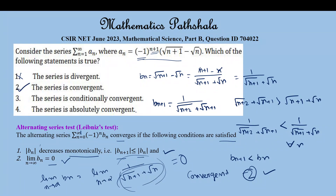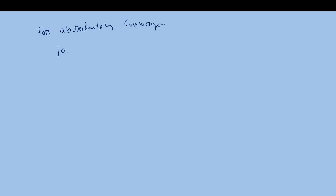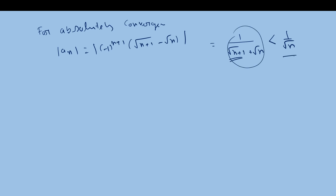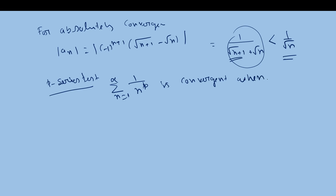Now we have to check whether the series is conditionally or absolutely convergent. For absolute convergence, we check |a_n|, which equals |(-1)^(n+1) * (√(n+1) − √n)| = 1 / (√(n+1) + √n). This term is less than 1/√n if we neglect the extra root term. From the p-series test, the summation of 1/n^p is convergent when p > 1, and divergent otherwise.